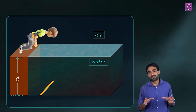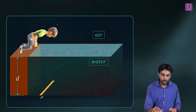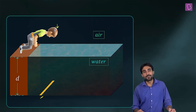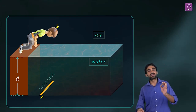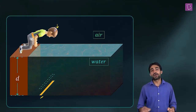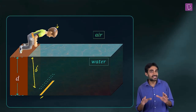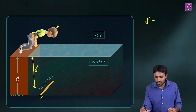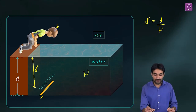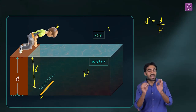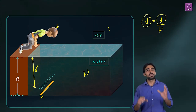Let me remind you of an important concept. Suppose there is a water tank with a ruler at the bottom. If you look from the top, you see the image of the ruler at a different depth. If the original depth is D and the image depth is D', then for paraxial rays: D' = D / mu, where mu is the refractive index of the medium.